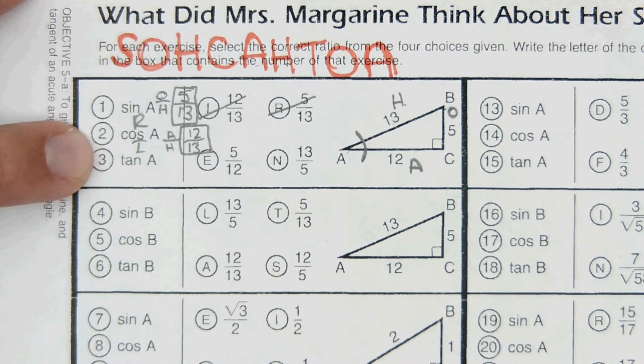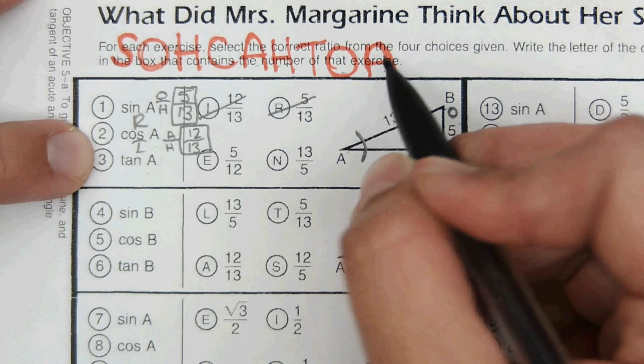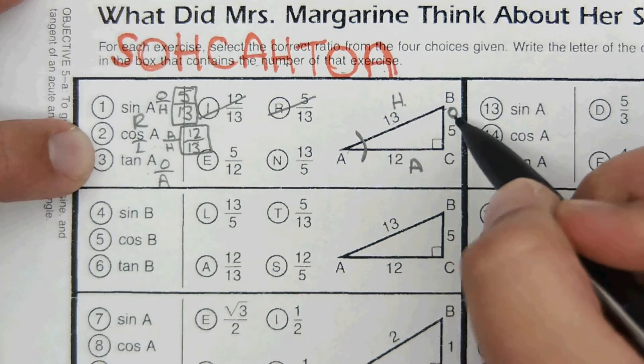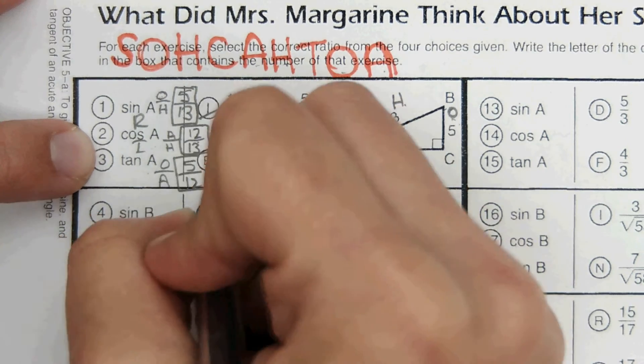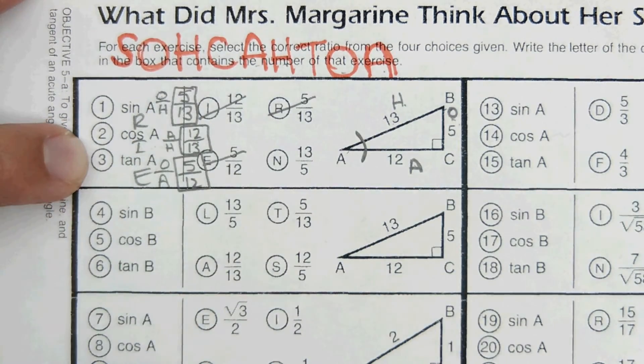And then tan, opposite over adjacent, 5 over 12.